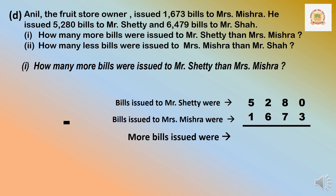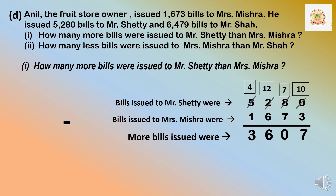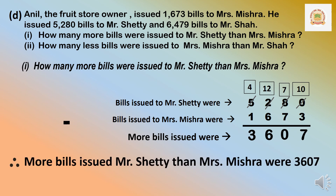Start the subtraction from the 1's place. 0 minus 3 cannot be done, so we borrow from the next number. 80 gives the number, becoming 70, and units place becomes 10. 10 minus 3 is 7. 7 minus 7 is 0. In the 200s, we cannot minus 600, so we borrow from 1,000s. 5,000 gives the number, becoming 1,200, and this becomes 4,000. 1,200 minus 600: 12 minus 6 is 6. 4,000 minus 1,000: 4 minus 1 is 3. Therefore, 3,607 more bills were issued to Mr. Shetty than Mrs. Mishra.